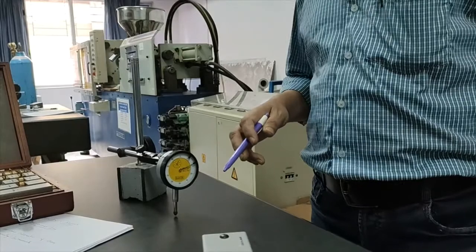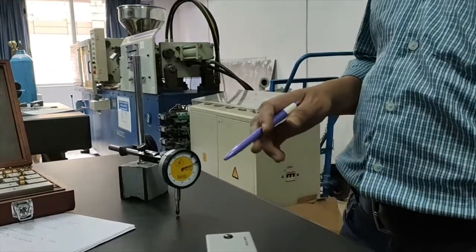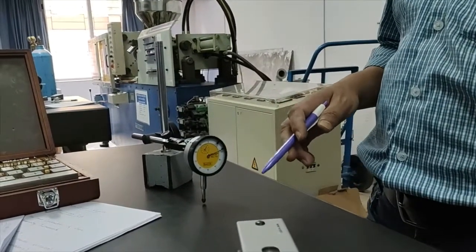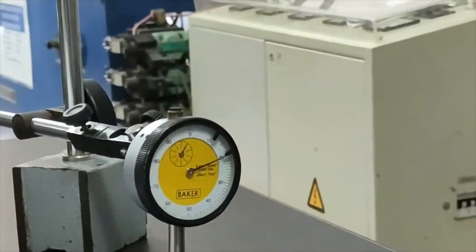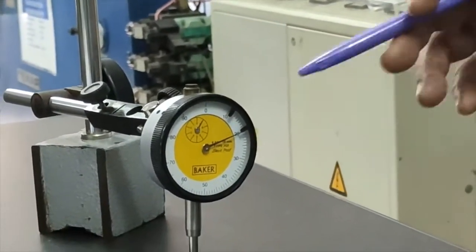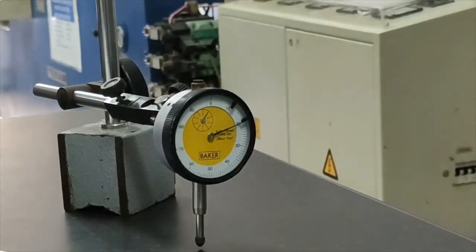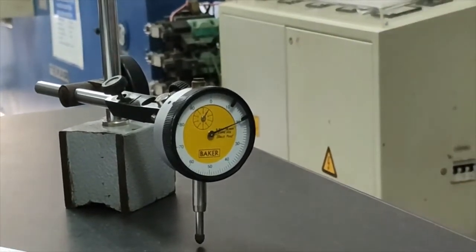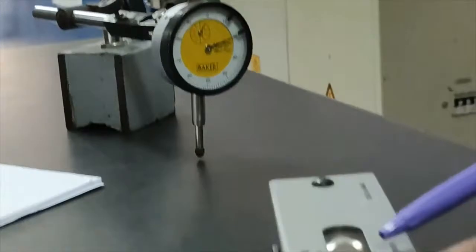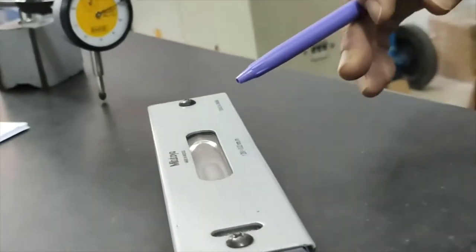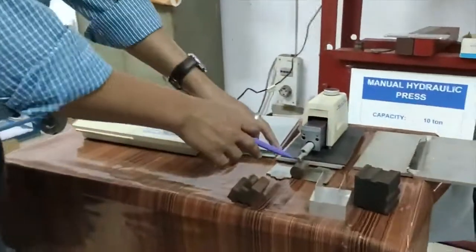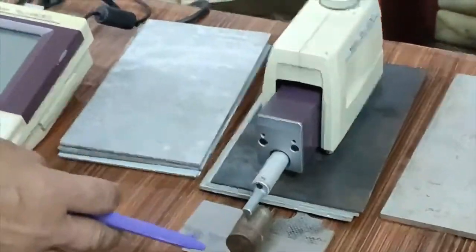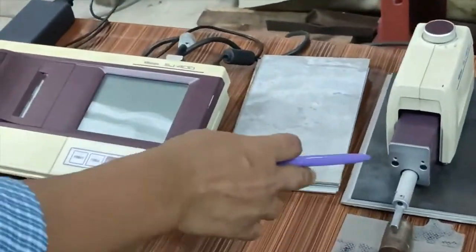Now come to experiment number 3 of ME326 Metrology Lab. The third experiment is calibration of dial indicator and flatness measurement with the help of spirit level, and different surface roughness measurement with the help of surface roughness tester.